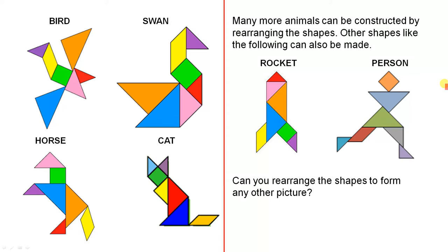Many more animals can be constructed by rearranging the shapes. Other shapes like the following can also be made. So here we have a rocket, and here we have a person.